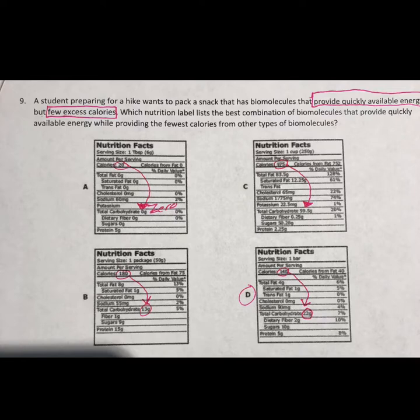Question number nine: we did this activity in class. Reading it, the phrase 'provides quick and available energy but few calories' pops out. You need something that gives quick available energy — carbohydrates — with the fewest amount of calories. All you had to do was circle the number of calories and the number of carbohydrates for each option, then compare all four. Whichever had the most carbohydrates and the least calories was your answer — so D was the answer.